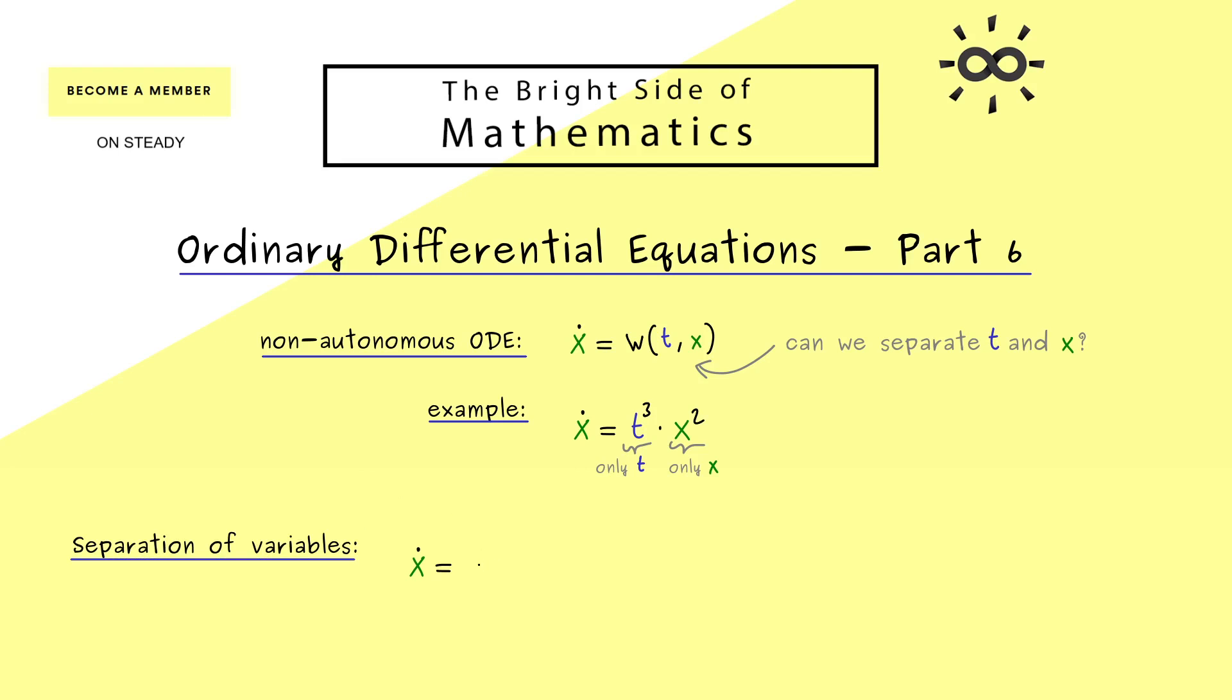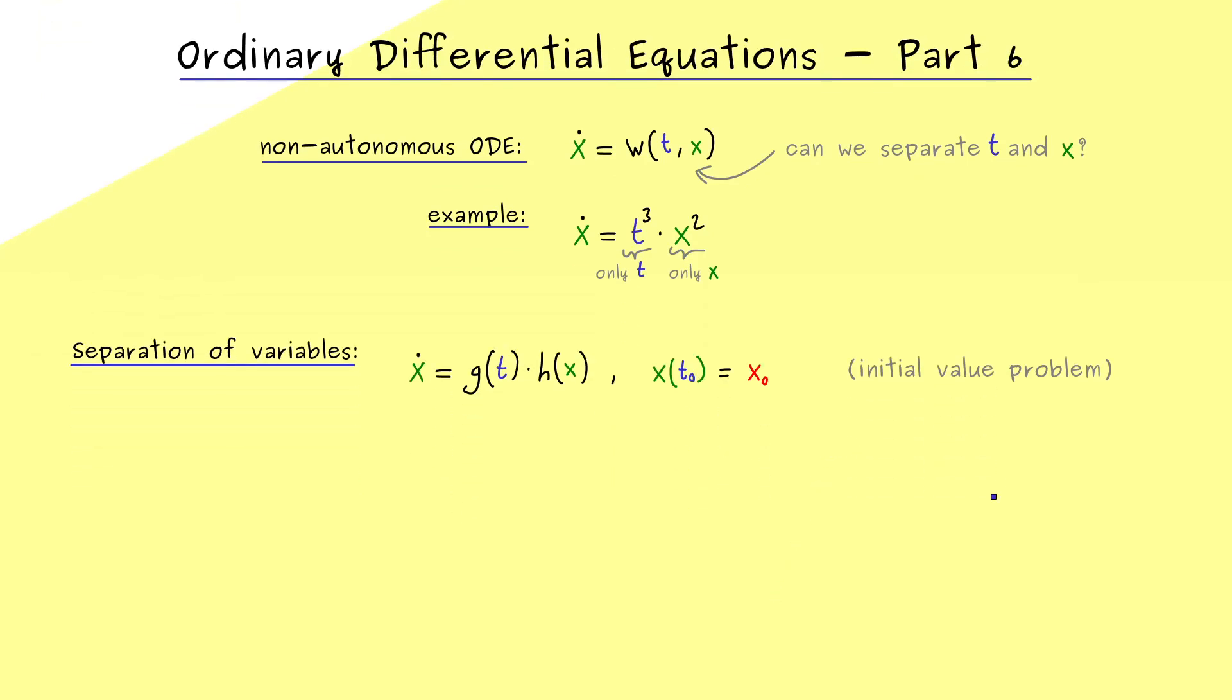It's applicable if the ODE can be written as x dot equals g of t times a function h of x. And as you might recall from the last video we can state an ODE as an initial value problem. This means that we search for solutions that satisfy a given value. For example we could say at the point t0 the solution should have the value x0. Please recall from the last video this is exactly what we call an initial value problem. Last time we discussed that for an autonomous ODE and now we take a non-autonomous ODE of exactly this form.